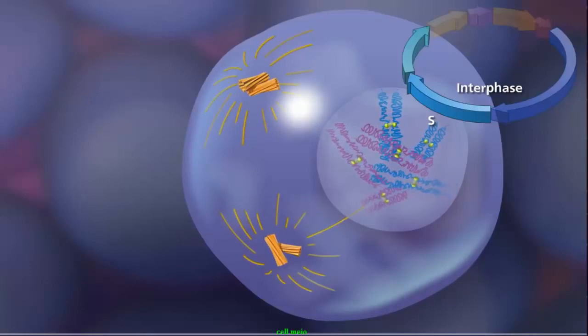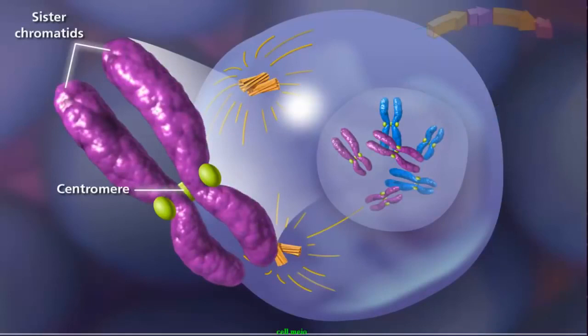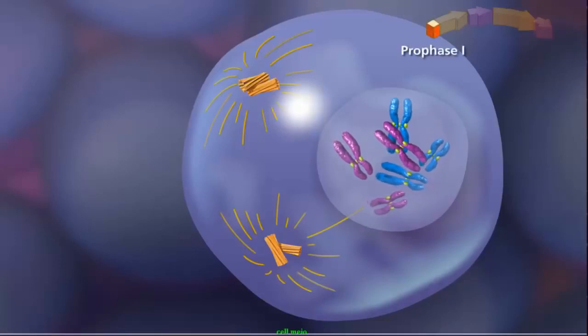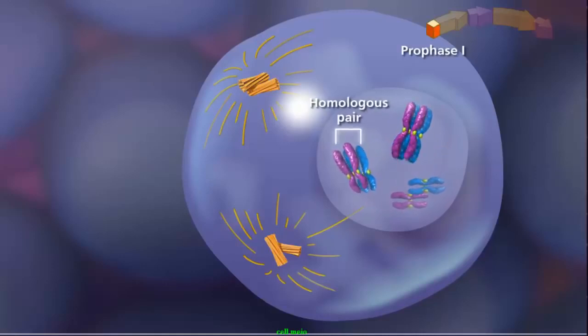Sister chromatids remain attached at the centromere and condense as the cell enters prophase I of meiosis. Up to this point, the cell looks similar to mitosis, but two events occur in meiosis that do not occur in mitosis and lead to genetic diversity. The first event occurs during prophase I, when homologous pairs of sister chromatids lie side by side in a process called synapsis.